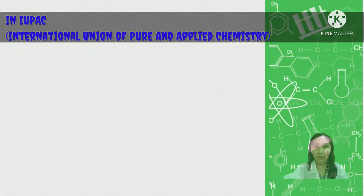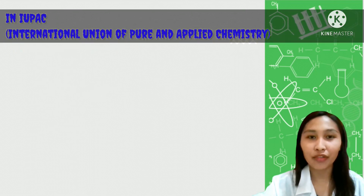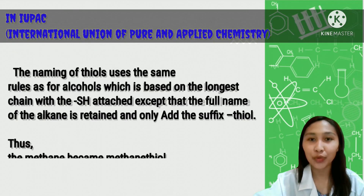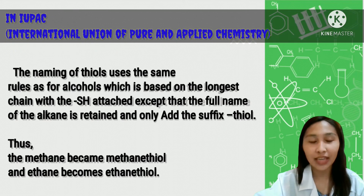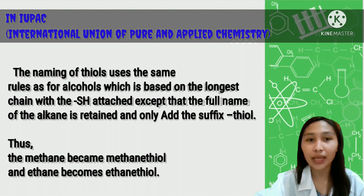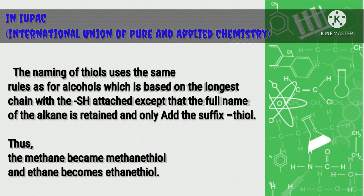In IUPAC nomenclature, the naming of thiols uses the same rules as for alcohols, based on the longest chain with the S-H attached, except that the full name of the alkane is retained with only the suffix '-thiol' added. Thus, methane becomes methanethiol and ethane becomes ethanethiol.